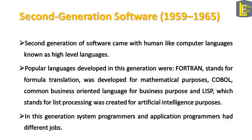The second generation of software came with human-like computer languages known as high-level languages. Popular languages developed in this generation were Fortran, which stands for formula translation, developed for mathematical purposes; COBOL, common business-oriented language, developed for business purposes; and LISP, which stands for list processing, created for artificial intelligence purposes.